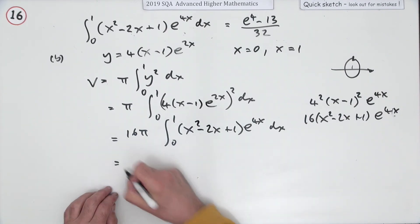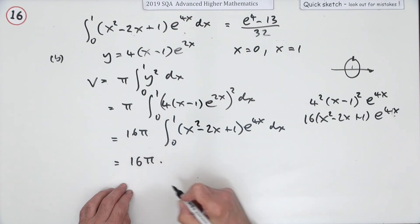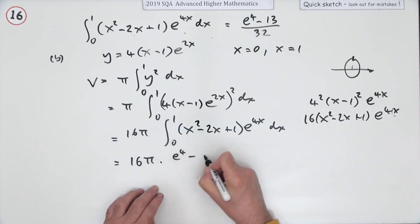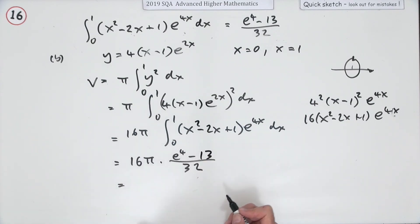Now you've got that answer already. The answer to that was obtained in part A. So it's 16 pi times e to the power 4 minus 13 over 32. So finally that will cancel down to just give 1 half of pi times e to the 4 minus 13 units cubed.